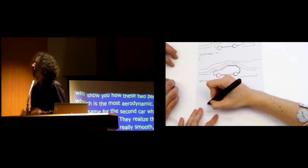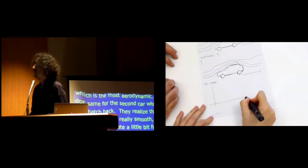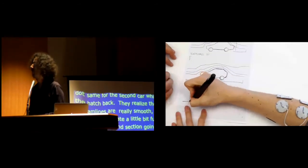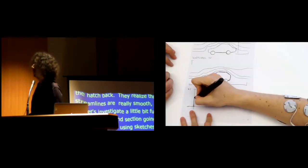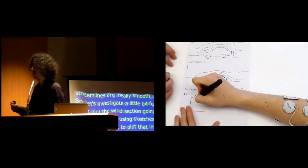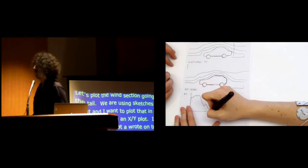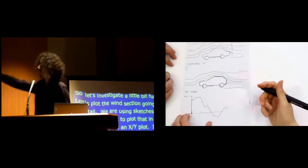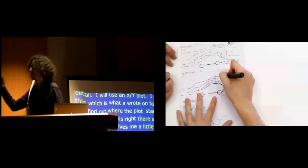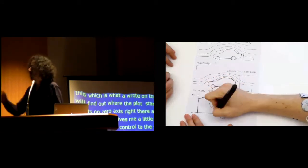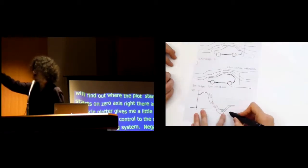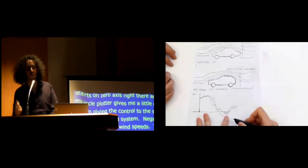So the interaction that results in the system is symmetric. It's the same thing for input, the same thing for output. So I'm going to continue and show you how these two people actually find which of these two card designs is the most aerodynamic. So they do the same for the second car, which is called a hatchback and they realize those streamlines are really smooth actually. So let's investigate a little bit further. Let's actually plot the winds going through the tails. So what they do is a cross-section of the data that is going through the tails. So once the selecting uses a line, again, we're using sketch as an input and I want to plot that in greater detail. So I'm going to use an xyplot. So I write it down a command for Muscleplotter.